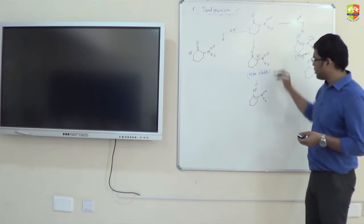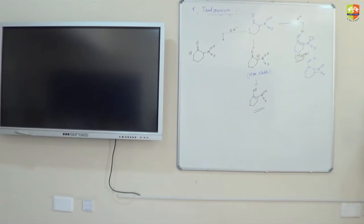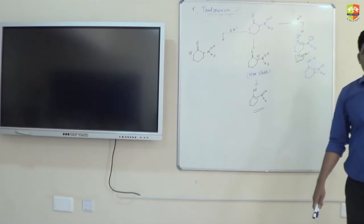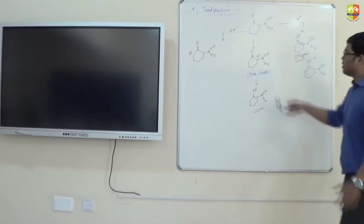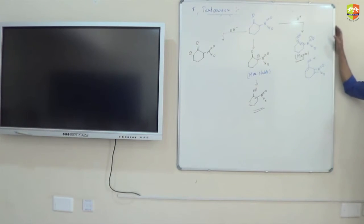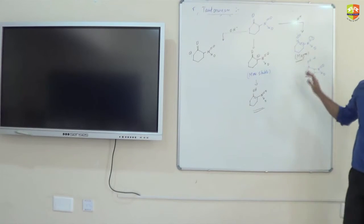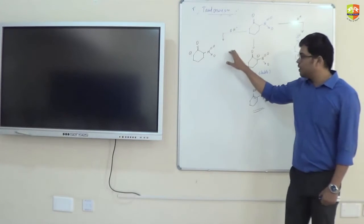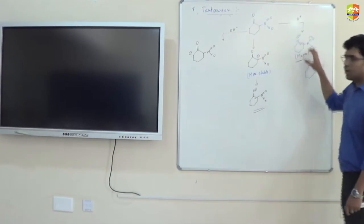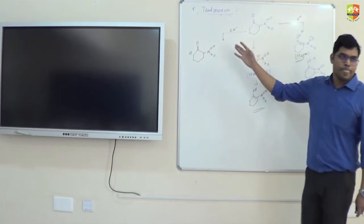In this example, in basic medium the major product and in acidic medium the major product are both the same. So you cannot generalize that the major product in acidic medium becomes minor in basic or vice versa. It depends on the molecule given. You have to decide by the stability of the alkene in acidic, and the stability of the carbanion in basic.